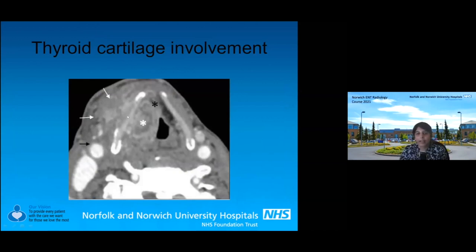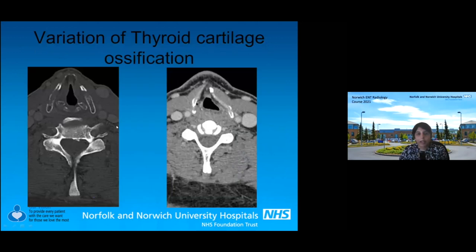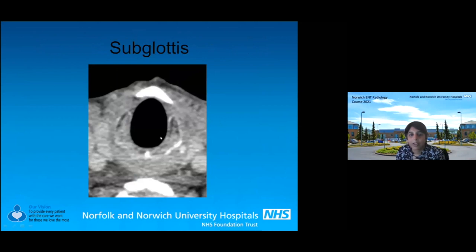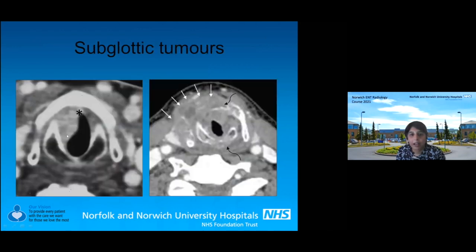Thyroid cartilage involvement is not always this simple. This is a large laryngeal tumor that's eroded through the thyroid cartilage into the strap muscles. They can have variable ossification, and you can get odd variations and bending of the thyroid cartilage, so be aware of variations and carefully inspect the inside and outside soft tissues when looking at the thyroid cartilage. For the subglottis, there should be no abnormal soft tissue — the cricoid should be pristine with no irregular areas. If you see anything asymmetrical, be worried about tumor, because these patients present late. Unfortunately, this is usually how patients present: circumferential abnormal soft tissue extending through the cartilages into the strap muscles.